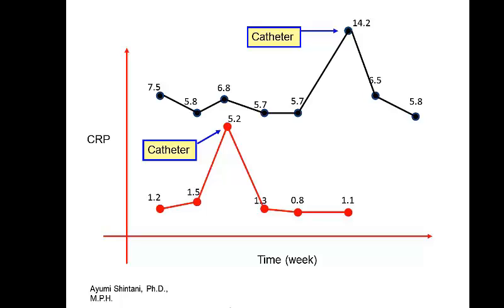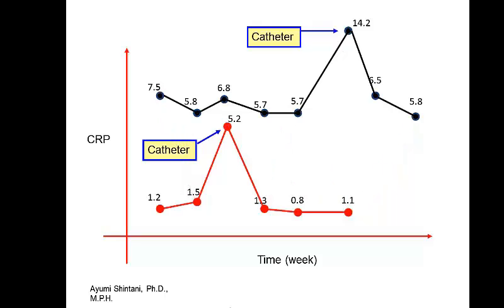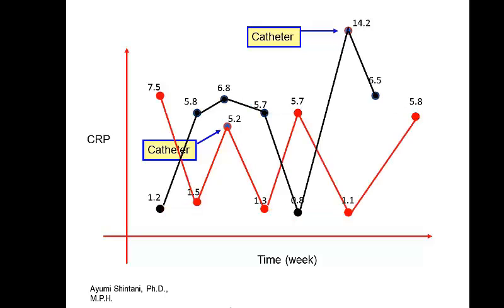Now let's say this CRP belongs to two patients and I recover the ID — so I know exactly which values are coming from which patient. When you see the data connected this way, do you think catheter is increasing inflammation? And how about this? It's exactly the same observations — I just connect the dots differently. So if you don't have the ID, the data could be interpreted one way or the other.